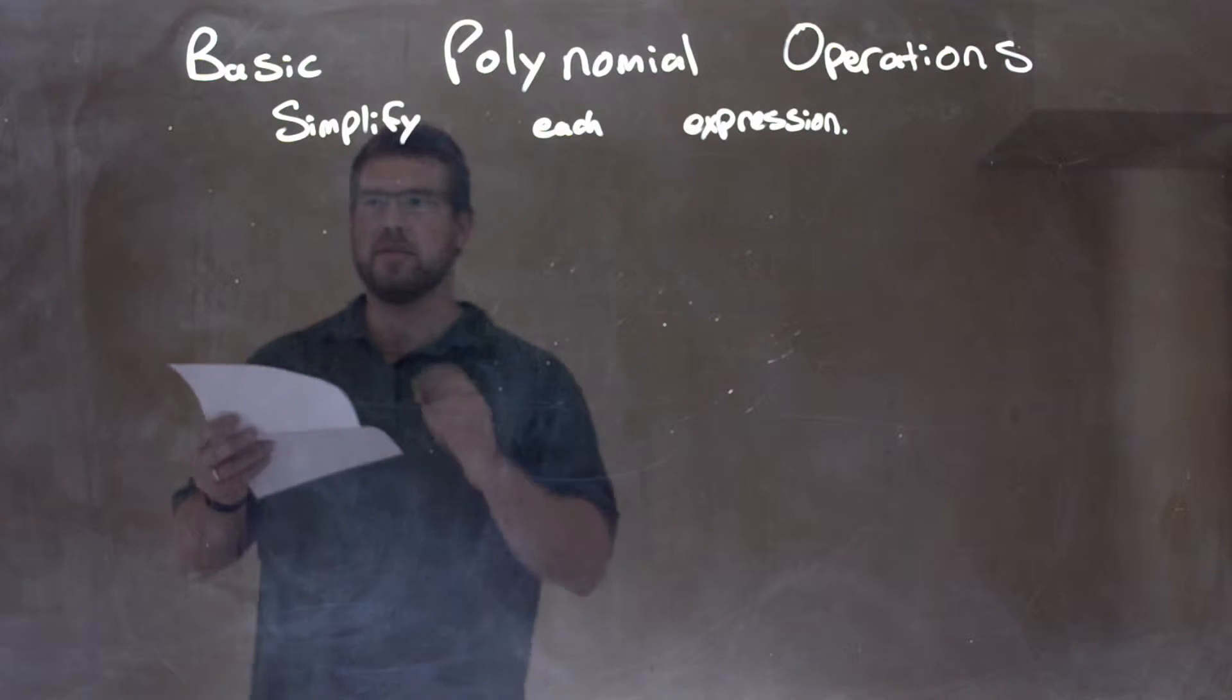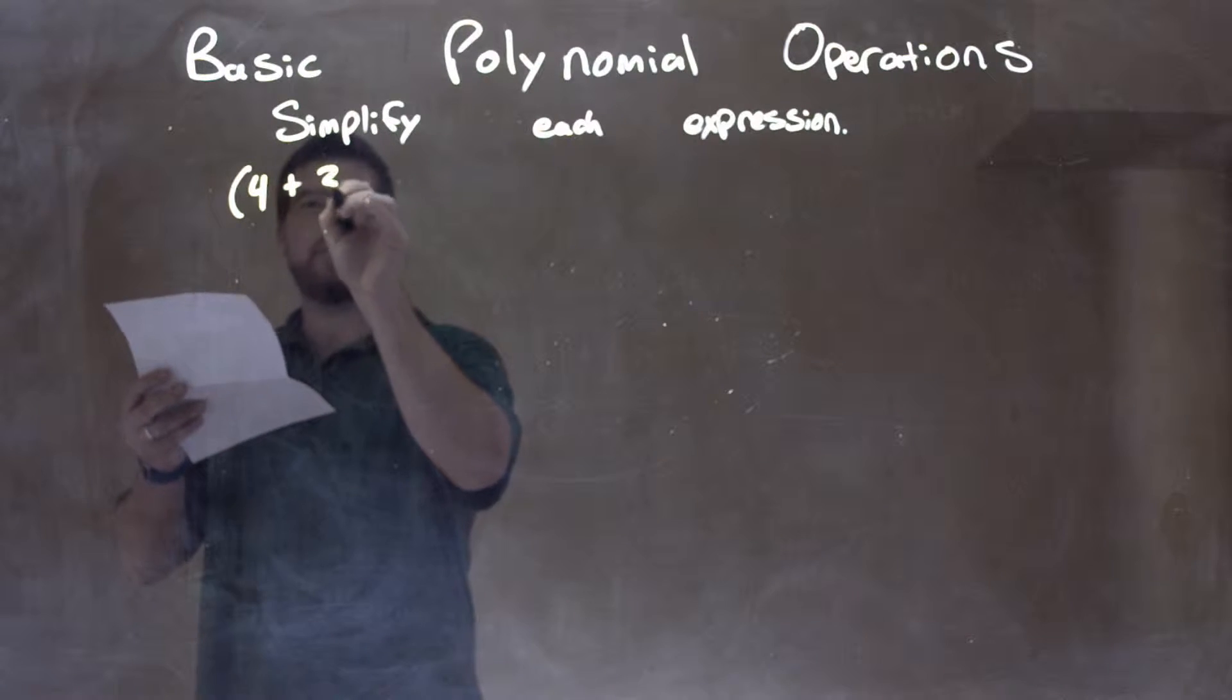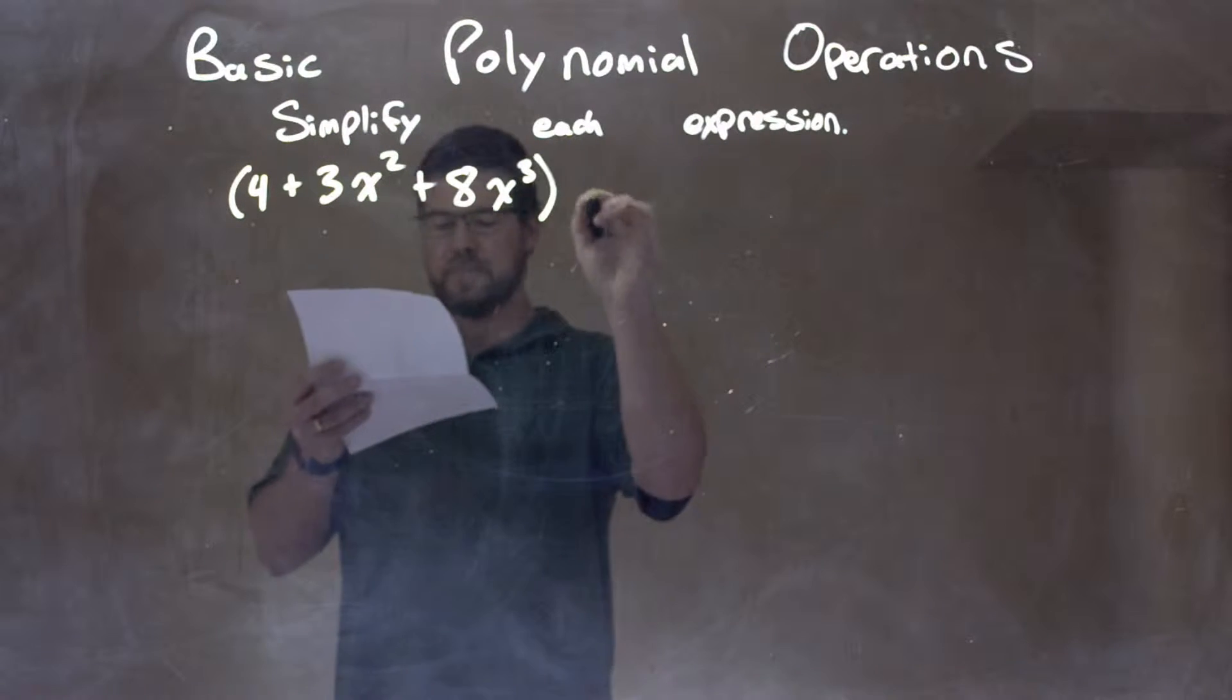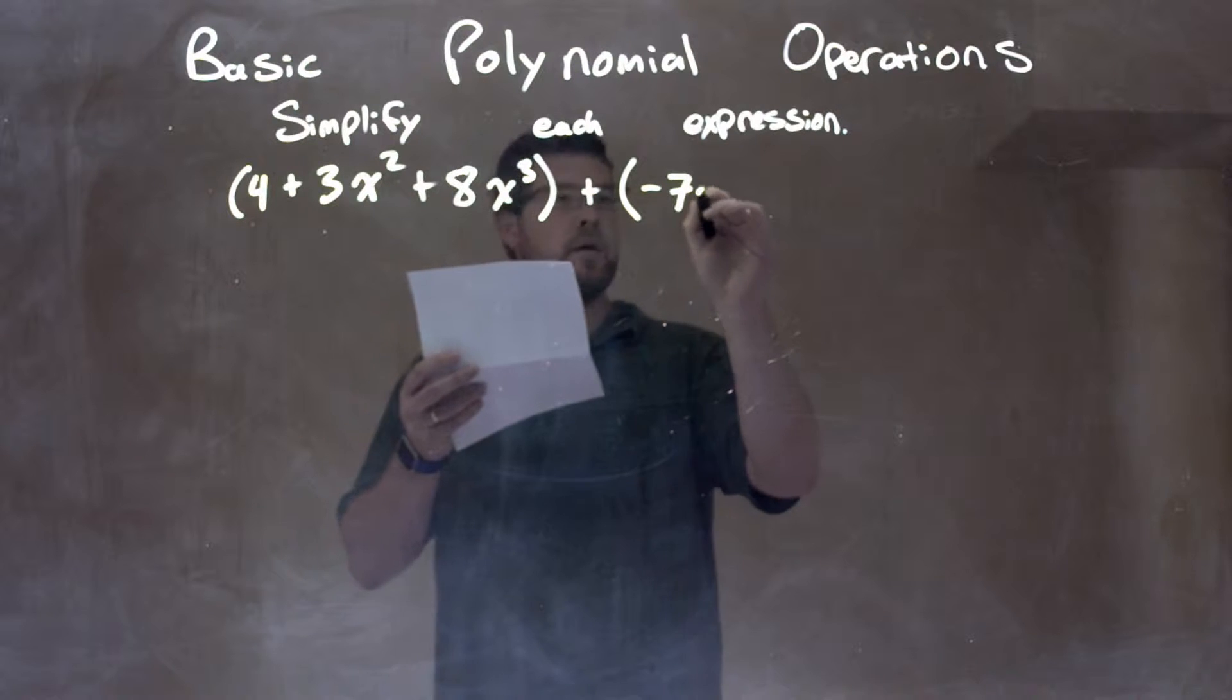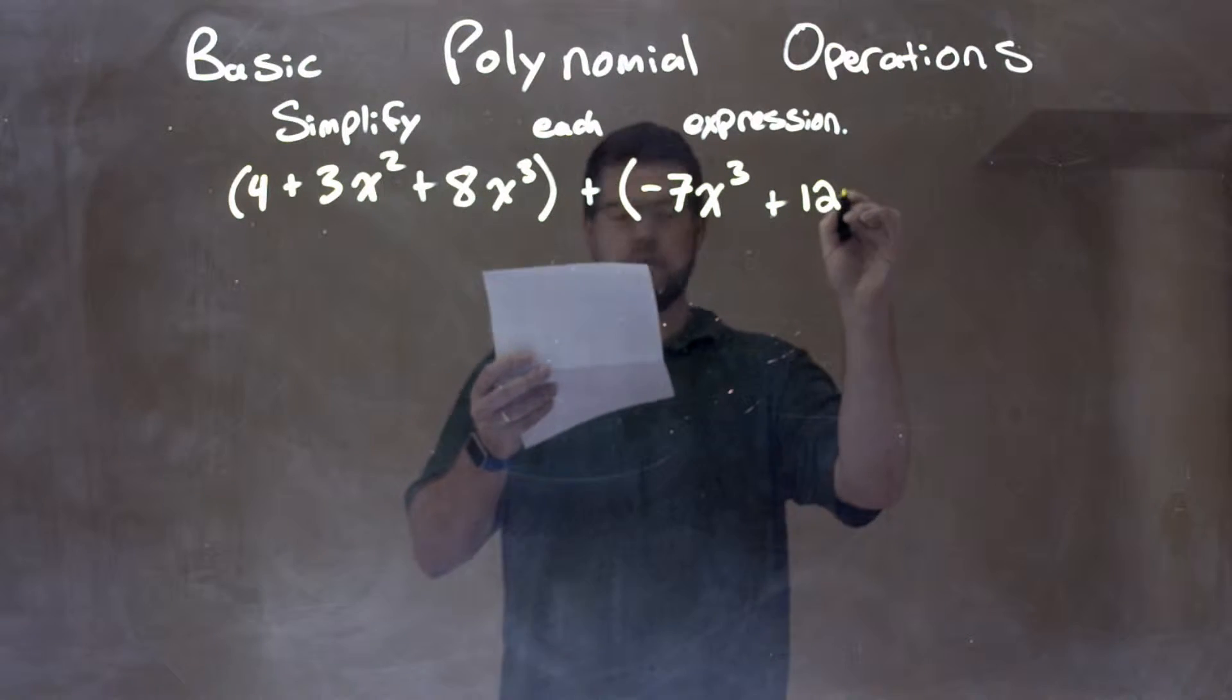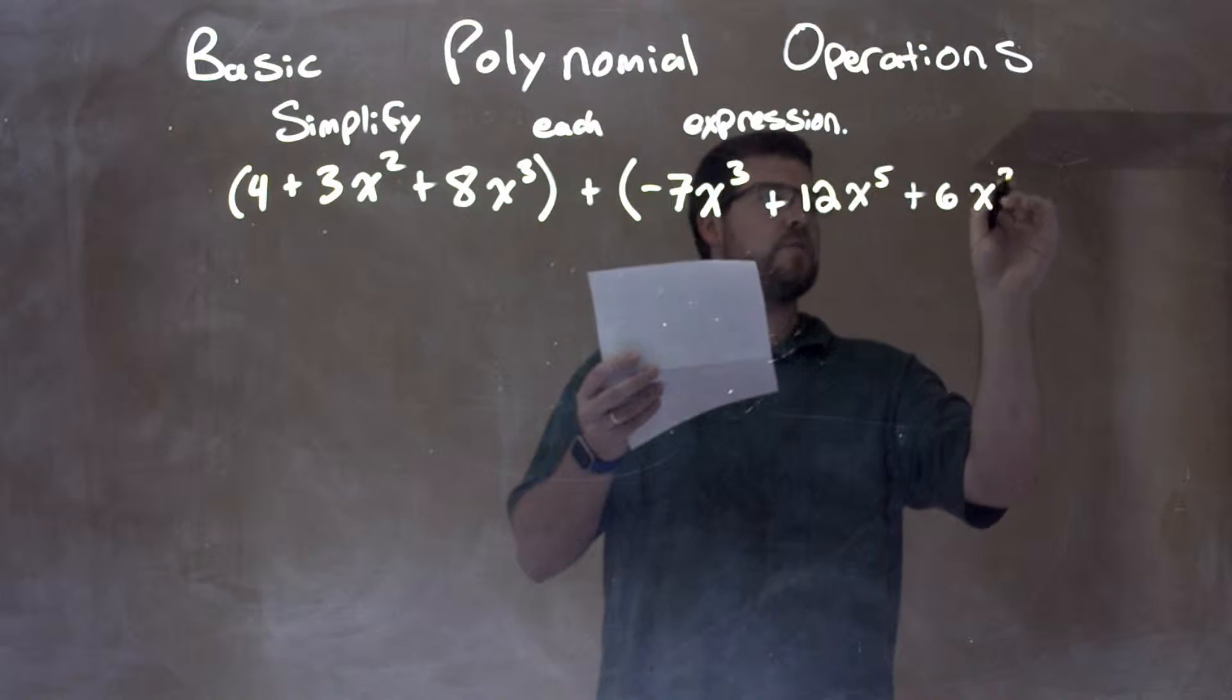So if I was given this expression: 4 plus 3x squared plus 8x to the third power, plus, in another parenthesis, negative 7x to the third plus 12x to the fifth plus 6x squared.